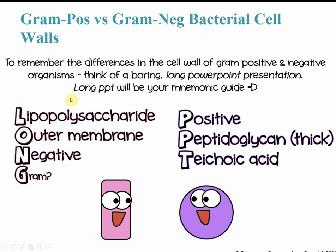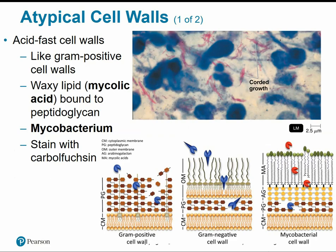The mnemonic L-O-N-G stands for: L — lipopolysaccharide, O — outer membrane, N — negative gram. P-O-S-I-T-I-V-E stands for: positive peptidoglycan, teichoic acid. So 'Long PowerPoint' helps you remember the key components of gram-negative versus gram-positive cell walls.